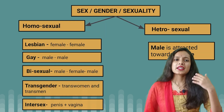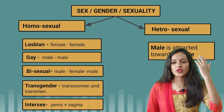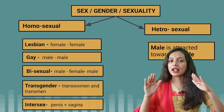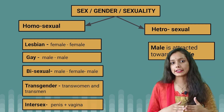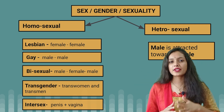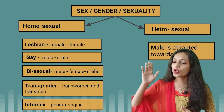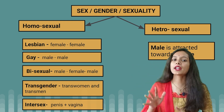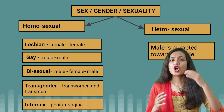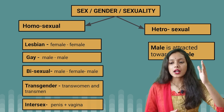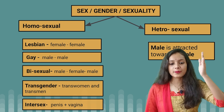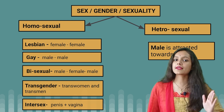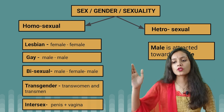First of all, we look at sex, gender, or sexuality. We divide this into two parts: one is homosexual and the other is heterosexual. Homosexuals include lesbian, gay, bisexual, transgender, and intersex.